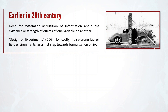More recently, in the early 20th century, scientists looked for formal ways to systematically acquire representative information about the existence or strength of effects of one or multiple variables on another variable. As a result, a paradigm called design of experiments, or DOE for short, started to develop based on statistics for the efficient design of various physical, chemical, or biological experiments. This was a first step towards formalization of the SA approach, as it provided a unified set of theories to answer SA-type questions.